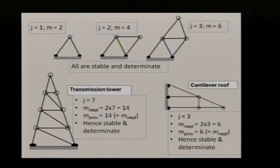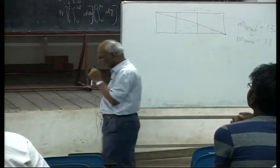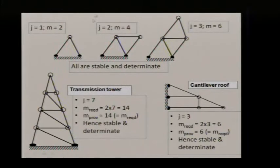So the basic triangle is j equals 1, m equals 2. Of course, there are 3 joints, but only one free joint. So the formula is based on the number of free joints. That is just the convenient way of looking at the stability of an open truss. So here are some pictures of some open trusses.